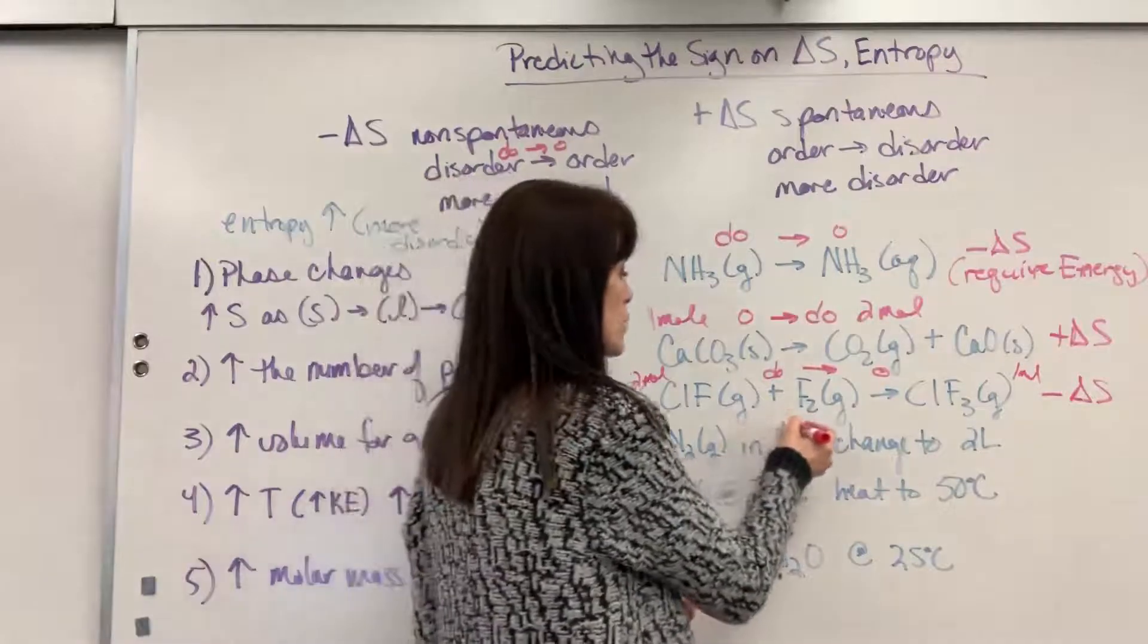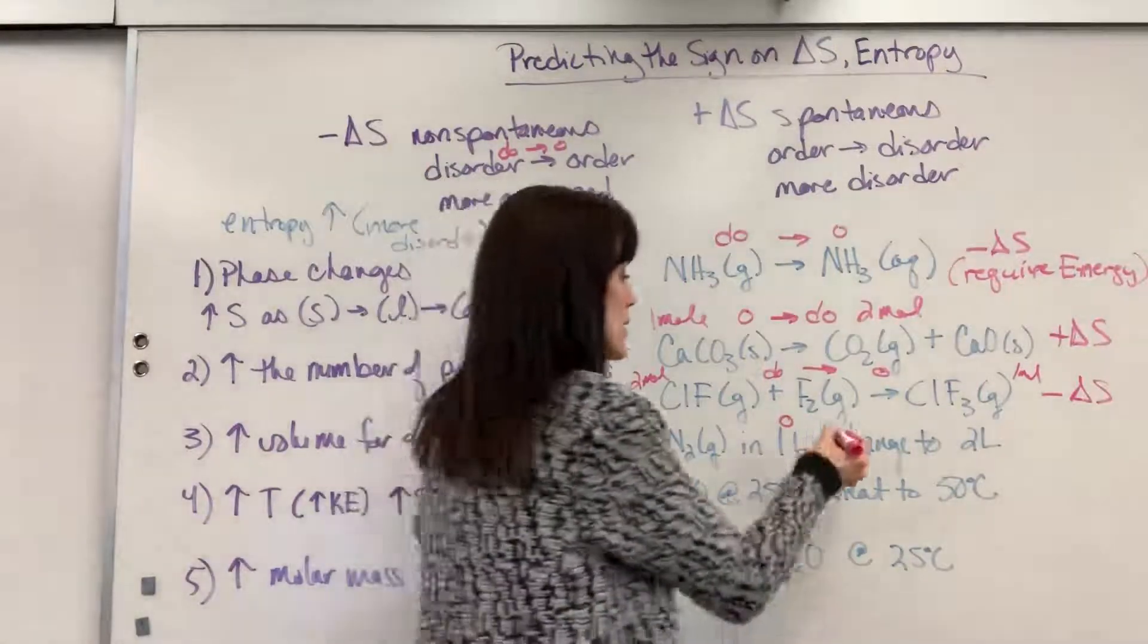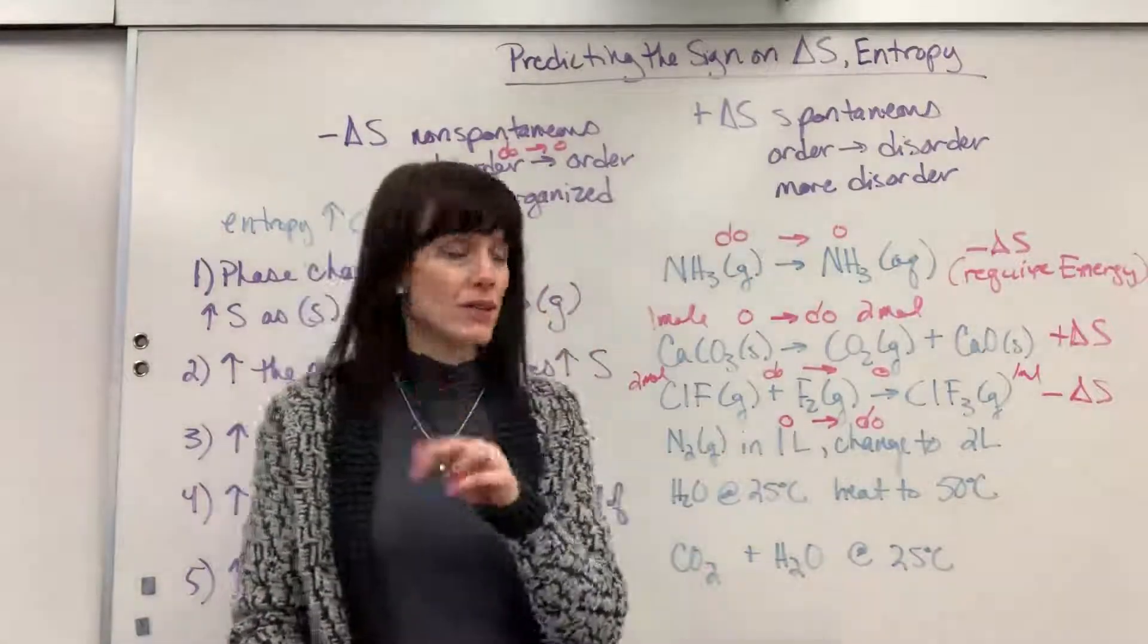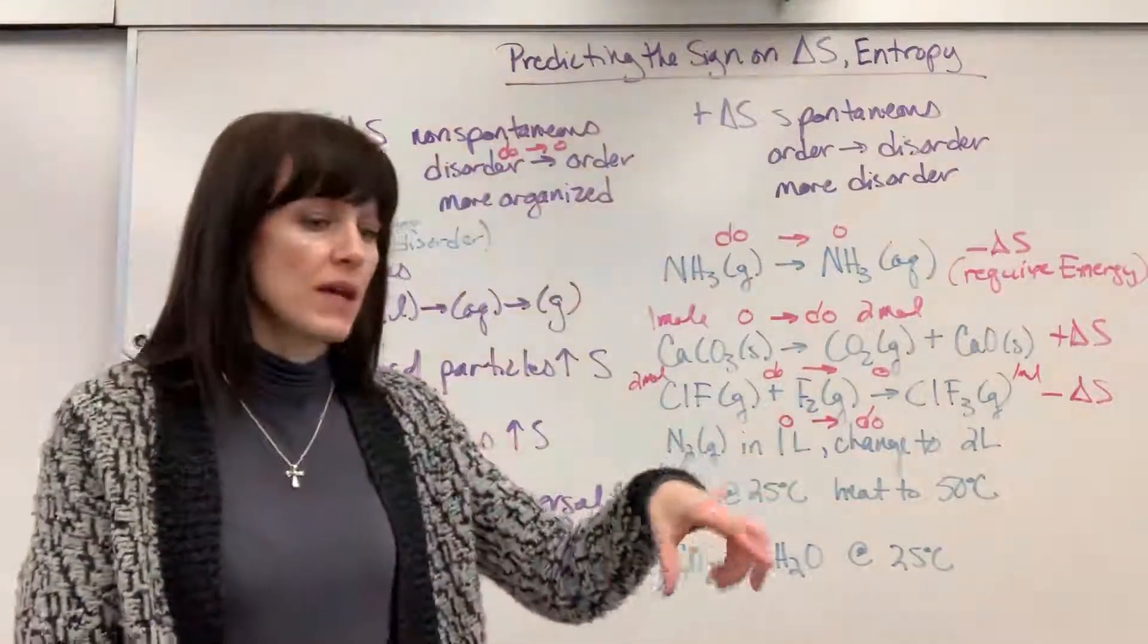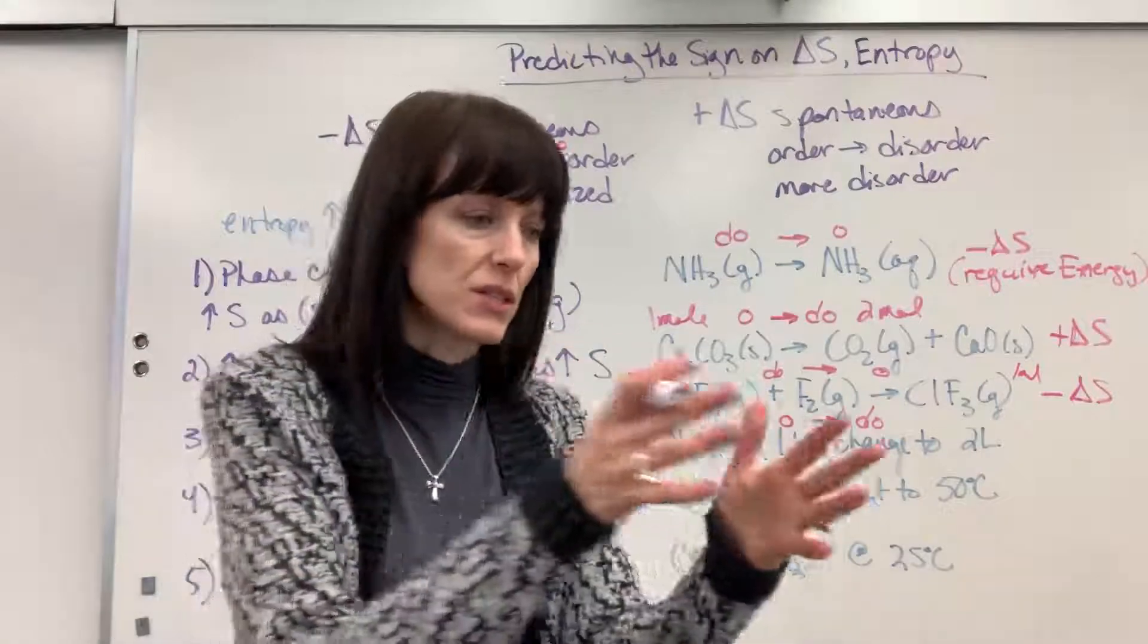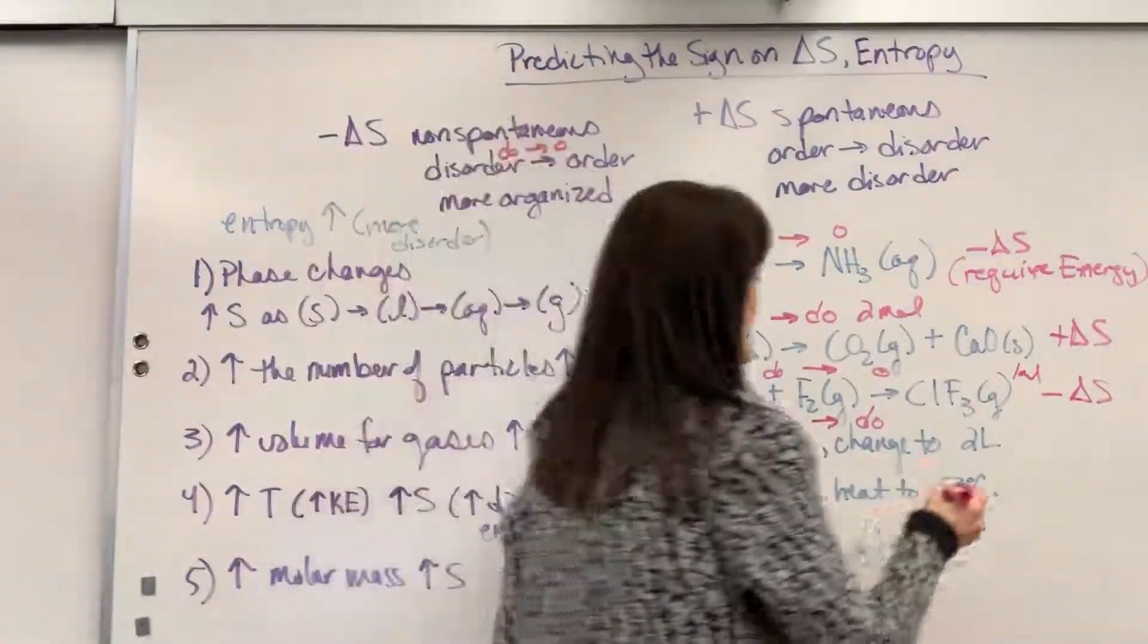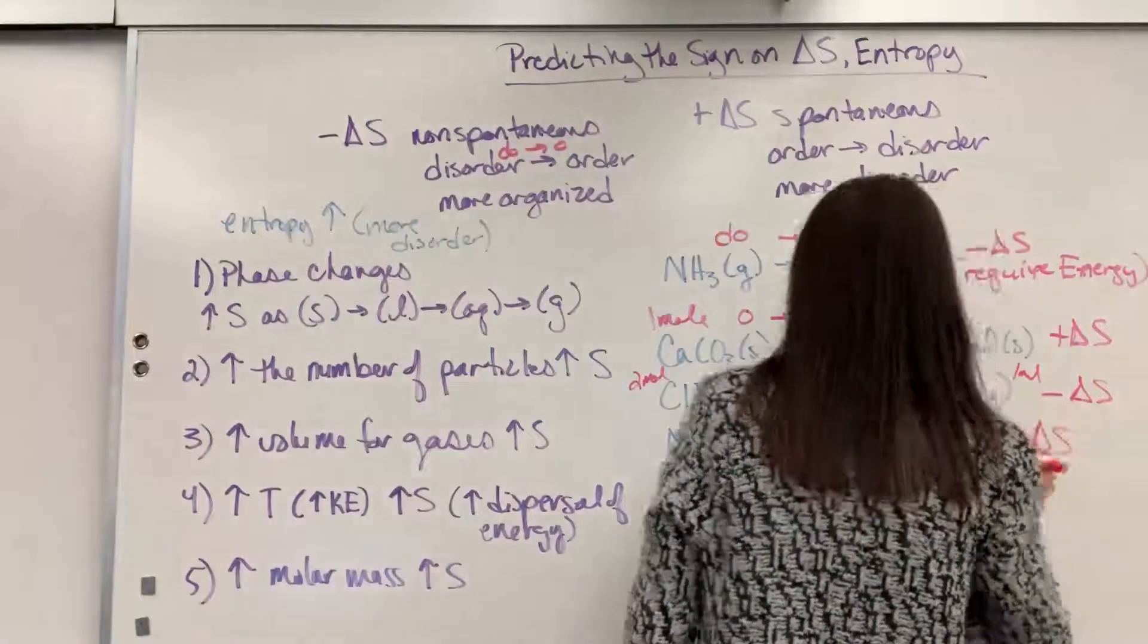Well, when you increase volume, you increase entropy. So in essence, we'd be going from more organized at only one liter to more disorder with two liters. So order to disorder, things going from organization to disorder, naturally happens, spontaneous. So that's going to be a positive delta S.